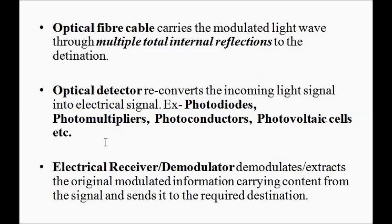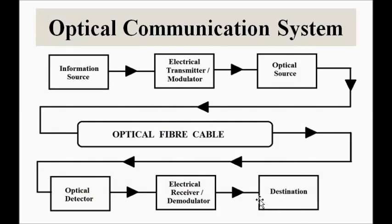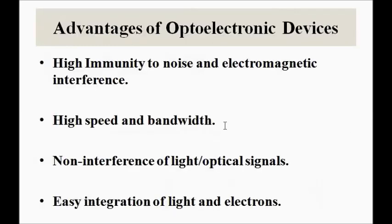The demodulated signal is then given to the destination where it can be used for various purposes. This is the basic layout of the optical communication system. The whole optoelectronics subject is about discussing each block in detail — optical sources like LED and laser, fiber optics, photo detectors, and other related things. These are the individual units we are going to discuss.